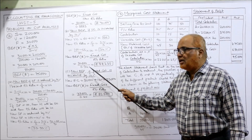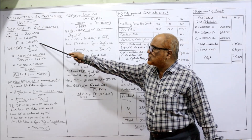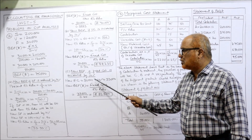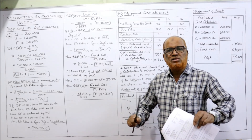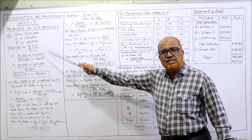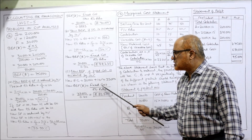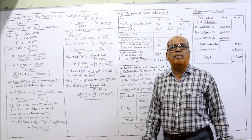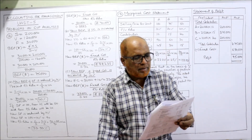New BEP if fixed cost is increased by 10%: Present fixed cost is 30,000. A 10% increase gives new fixed cost of 33,000. Selling price and variable cost remain the same, so PV ratio remains 40%. New BEP = 33,000 ÷ 0.4 = 82,500. This is the new breakeven point. That completes problem number 12.